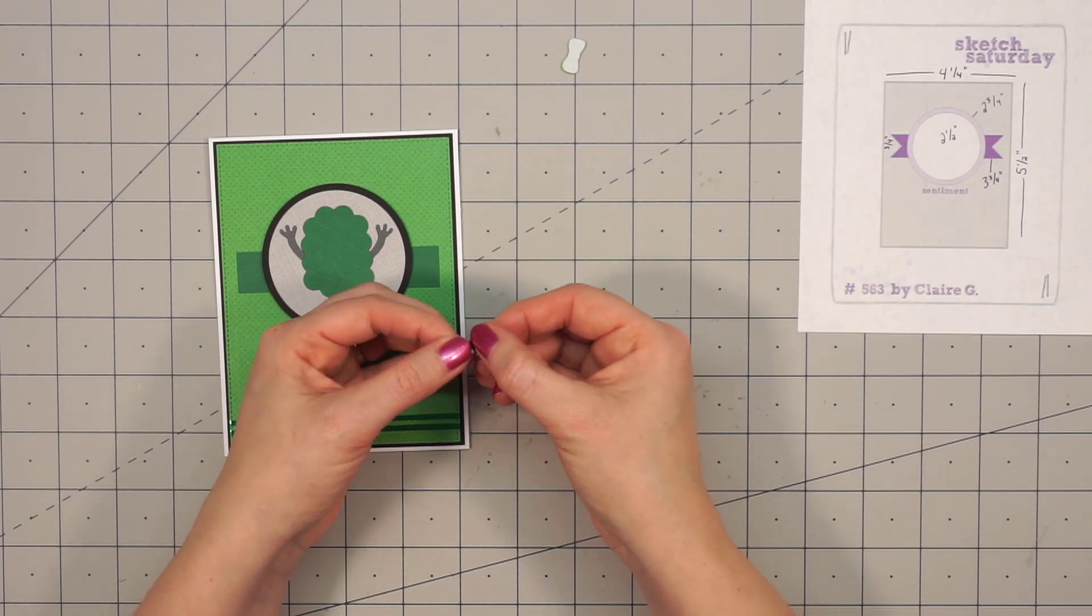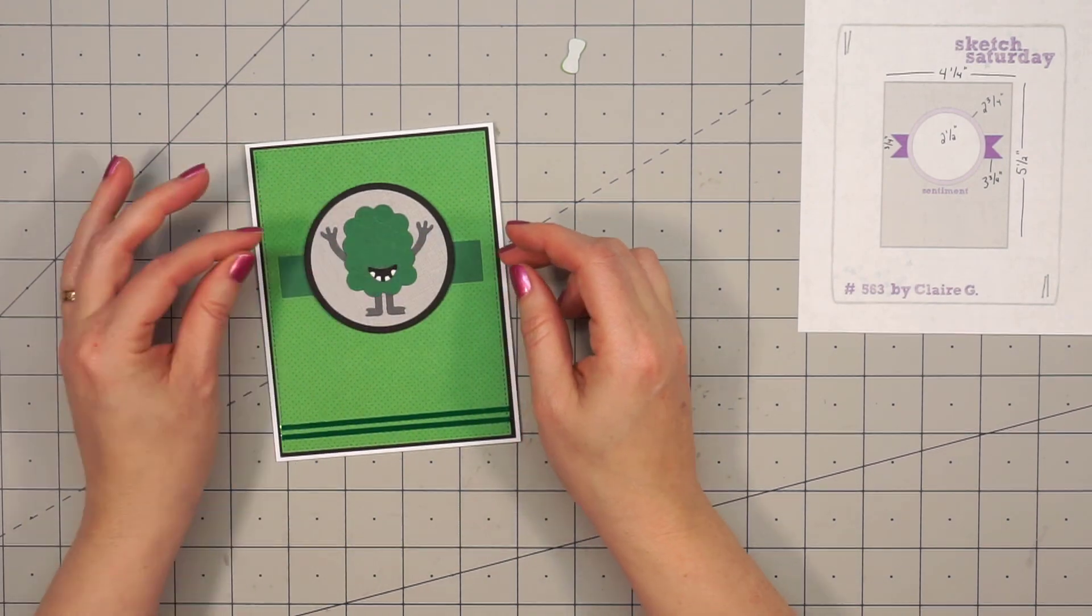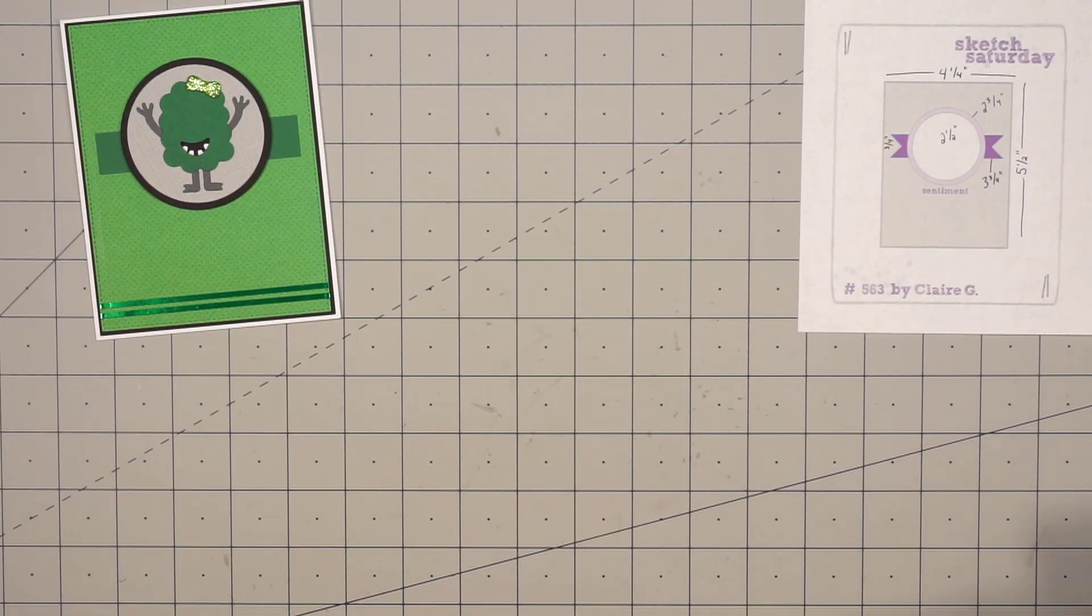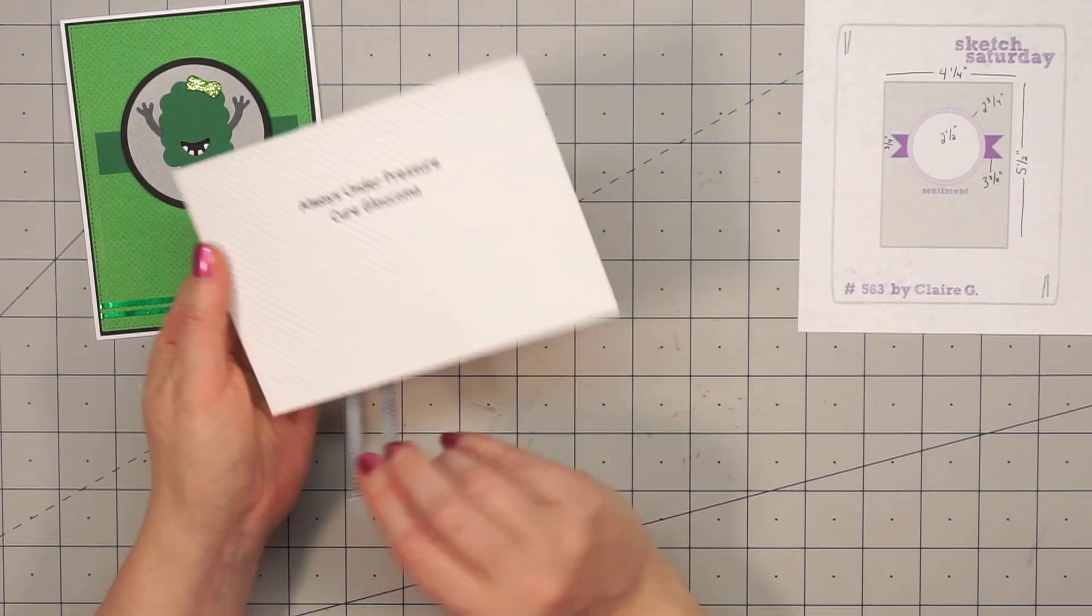So I cut out the arms and the legs just using some dark grey cardstock. Assembled the mouth and this is going to be a little girl monster so I gave her a sparkly green bow.